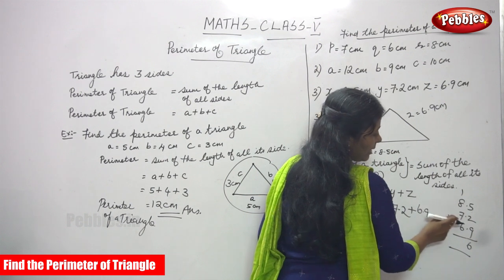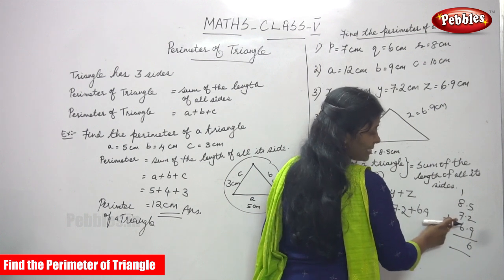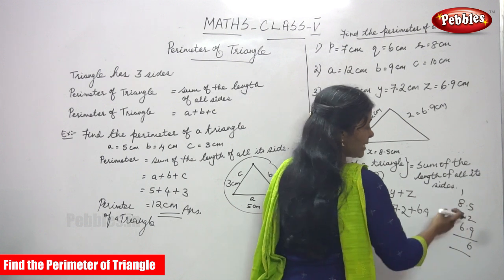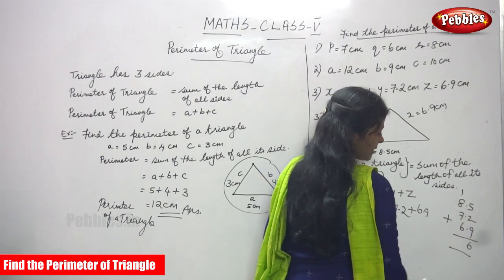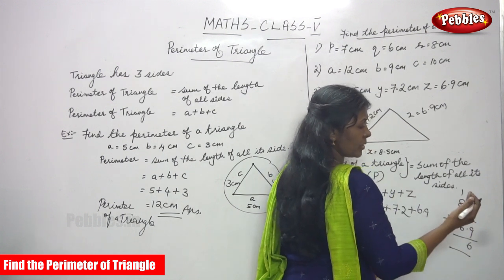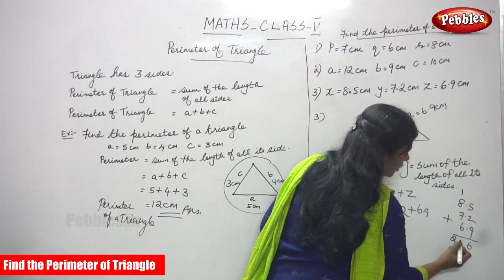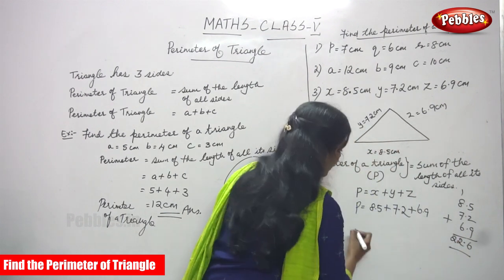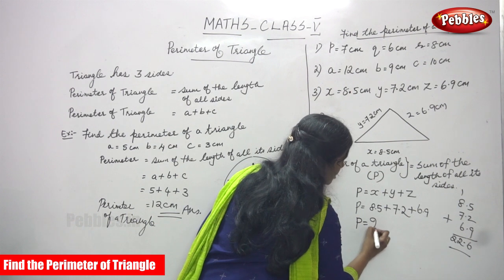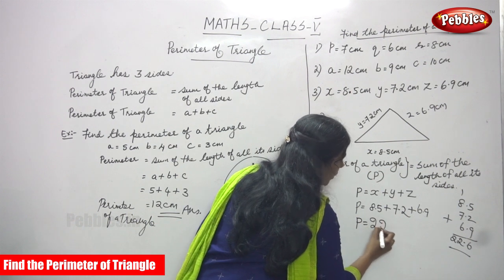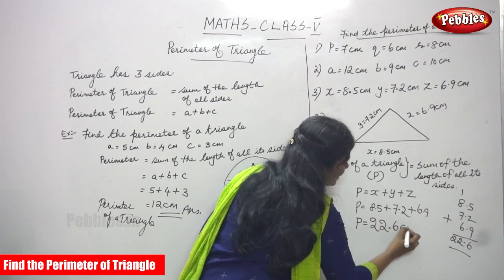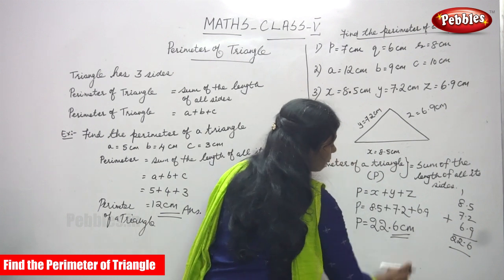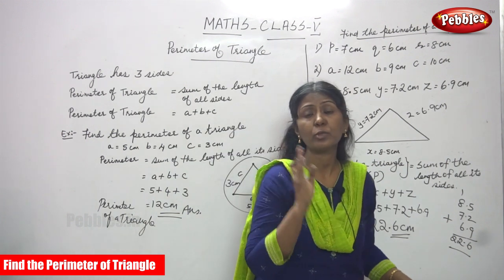Adding the digits: 9 plus 2 is 11, 11 plus 5 is 16 — write 6, carry 1. Then 8 plus 1 is 9, 9 plus 7 is 16, and continuing to add gives us 22. So the total is 22.6. The perimeter of the triangle is equal to 22.6 cm.